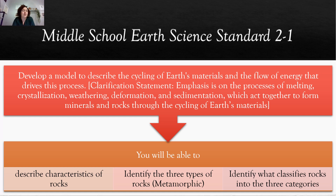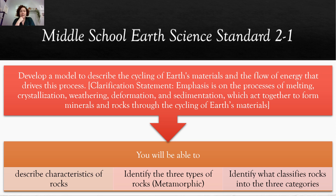We're still working with middle school earth science standard 2-1, which states that you will develop a model to describe the cycling of earth's materials and the flow of energy that drives this process. You should be able to emphasize the processes of melting, crystallization, weathering, deformation, and sedimentation, which act together to form minerals and rocks. Basically, you should be able to describe characteristics of rocks, identify the three types — focusing today on metamorphic — and identify the processes by which we get different types of metamorphic rocks.